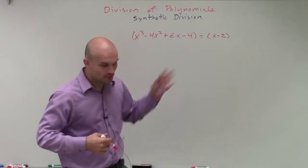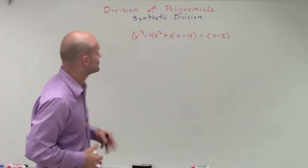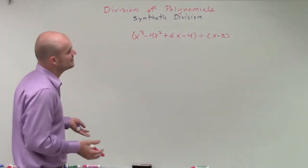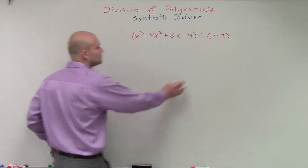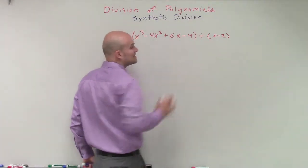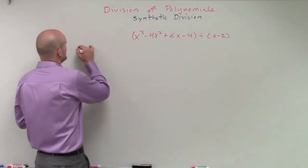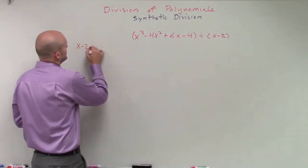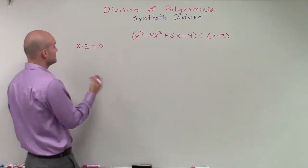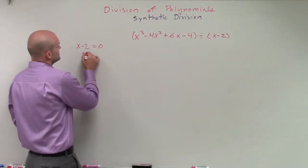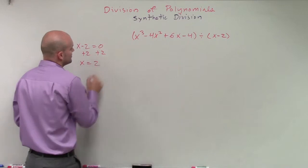In this example, we need to solve by synthetic division. We make sure that our divisor is a binomial and linear, which it is. So therefore, we take our divisor and set it equal to 0 — that's the first easy step. Then solve for x.